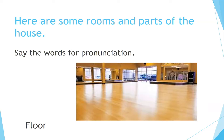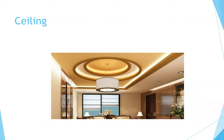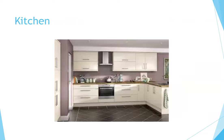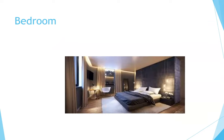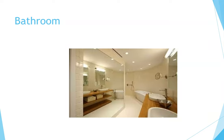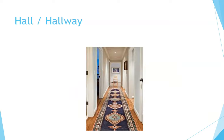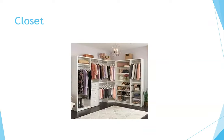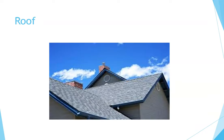Here are some rooms and parts of the house. Say the words for pronunciation. Floor. Ceiling. Kitchen. Bedroom. Bathroom. Hall or hallway. Closet.